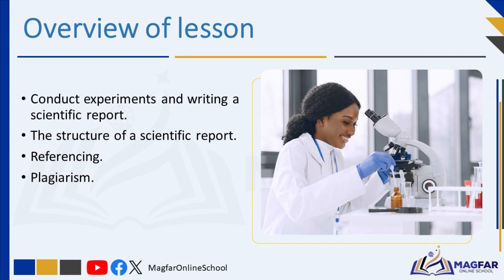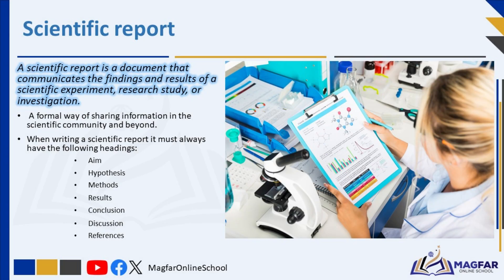You can then carry out an experiment to prove or to disprove this. After conducting the experiment, you will need to write a document about your experiment and observations. This document is known as a scientific report. A scientific report is a document that communicates the findings and results of a scientific experiment, research study, or investigation. It is a formal way of sharing information in the scientific community and beyond.